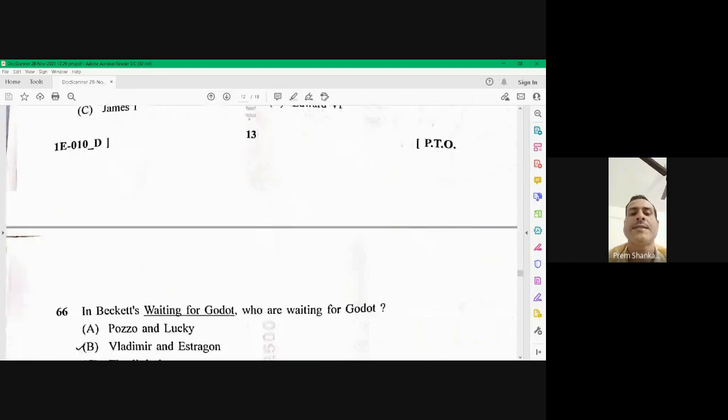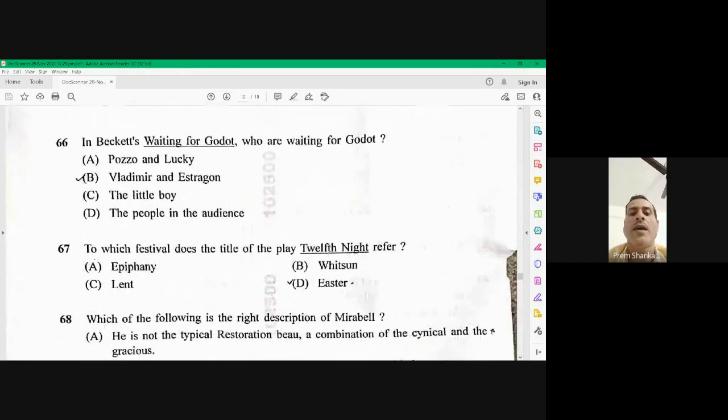Question number 66. In Beckett's waiting for Godot. Who are waiting for Godot? So Vladimir and Astragon. That's the right option. B is the right option.